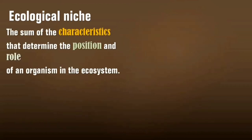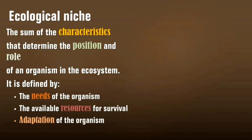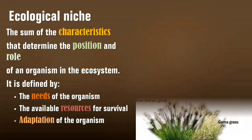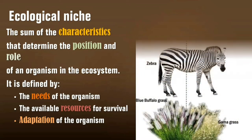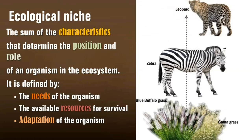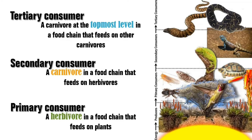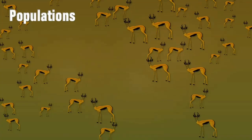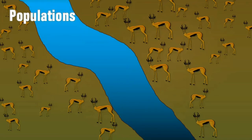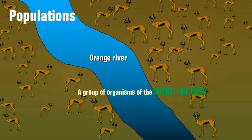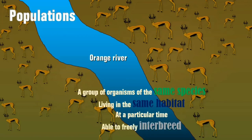The concept of a niche is central to ecological theories and can be influenced by abiotic factors, food preferences, and microclimate. Competition is a driving force in the evolution of adaptations that enable niche partitioning. The sum of the characteristics that determine the position and role of an organism is called the ecological niche. It can be determined by the needs of the organism, the available resources for survival, and the adaptation of the organism.